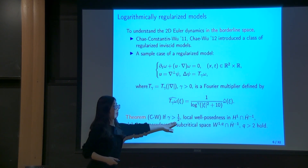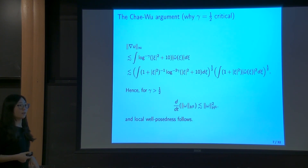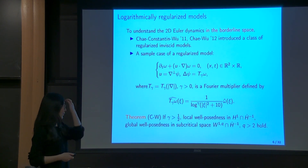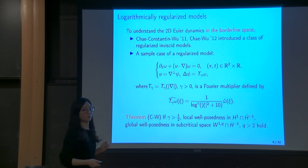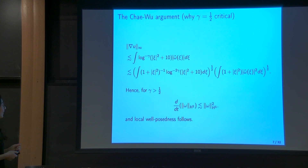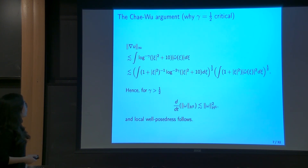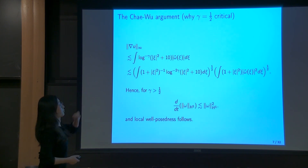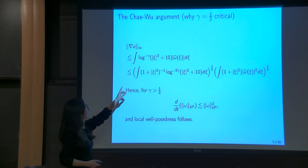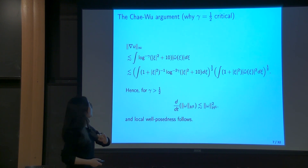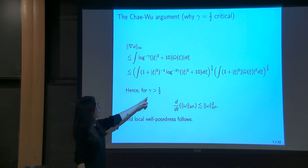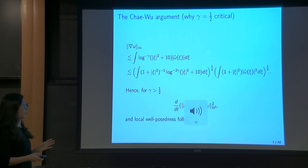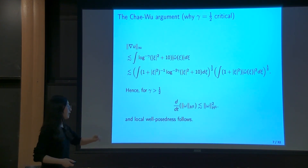Where does this threshold of 1/2 come from? In their argument, the main part is how to control the Lipschitz norm of the velocity. For that, they move to the frequency side and try to control it by the borderline space norm of the solution; the remaining factor is finite only when gamma is greater than 1/2. For this good gamma we get a differential inequality, and by using the energy method we can obtain local well-posedness.